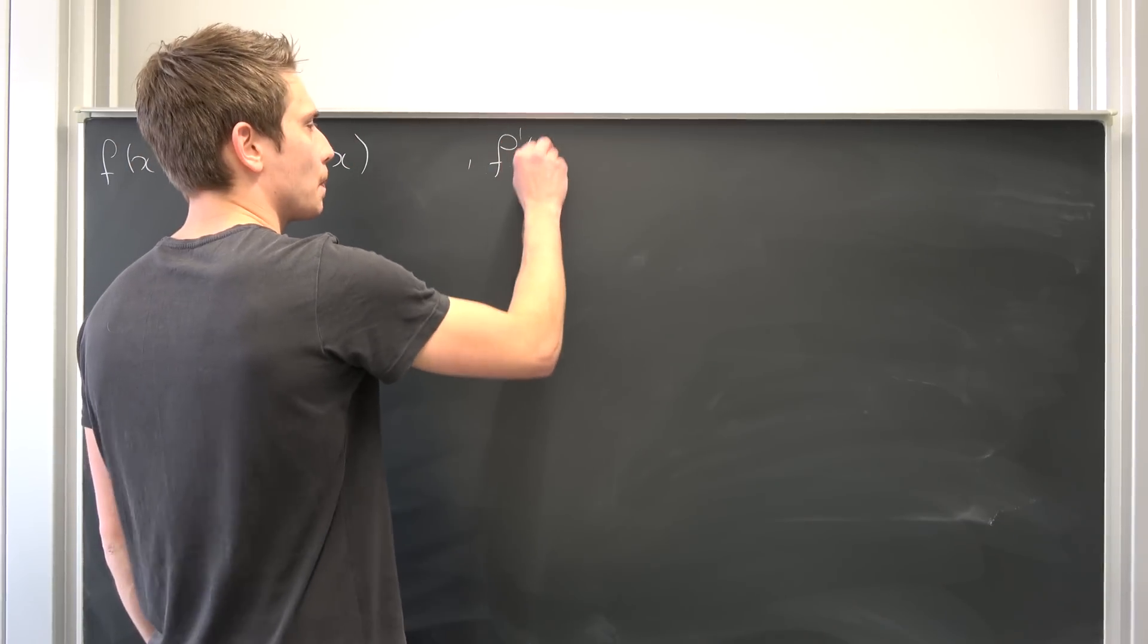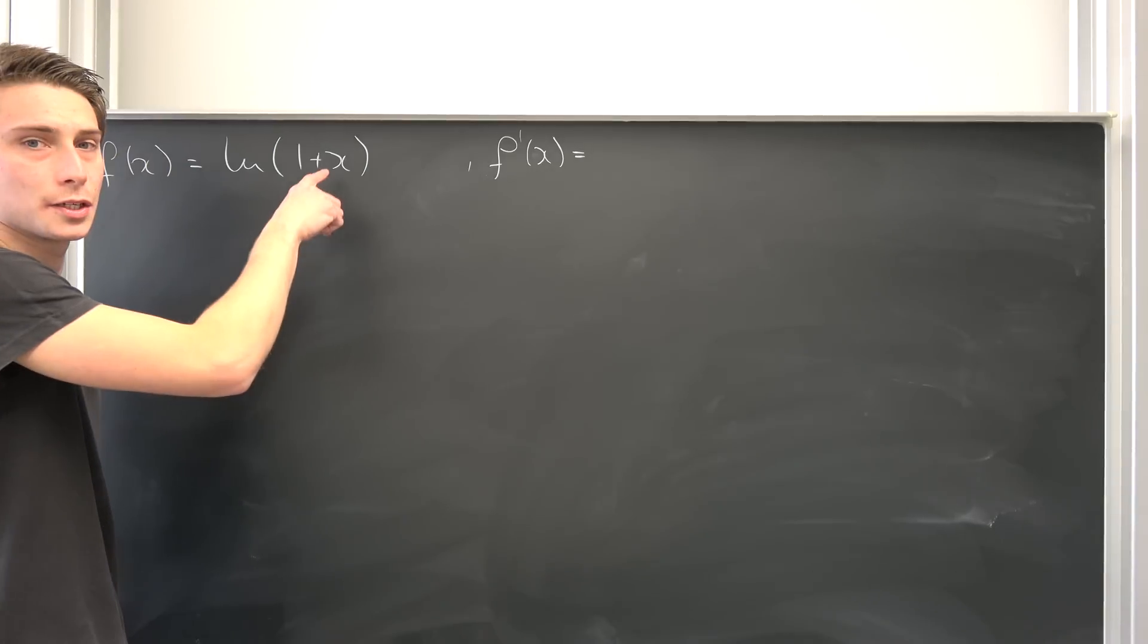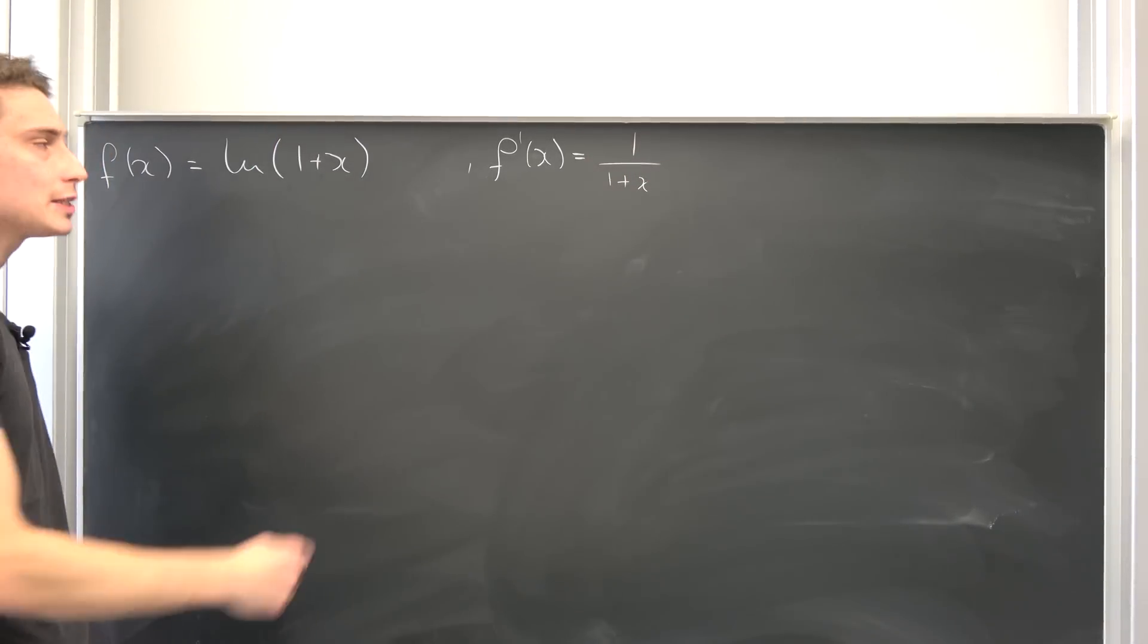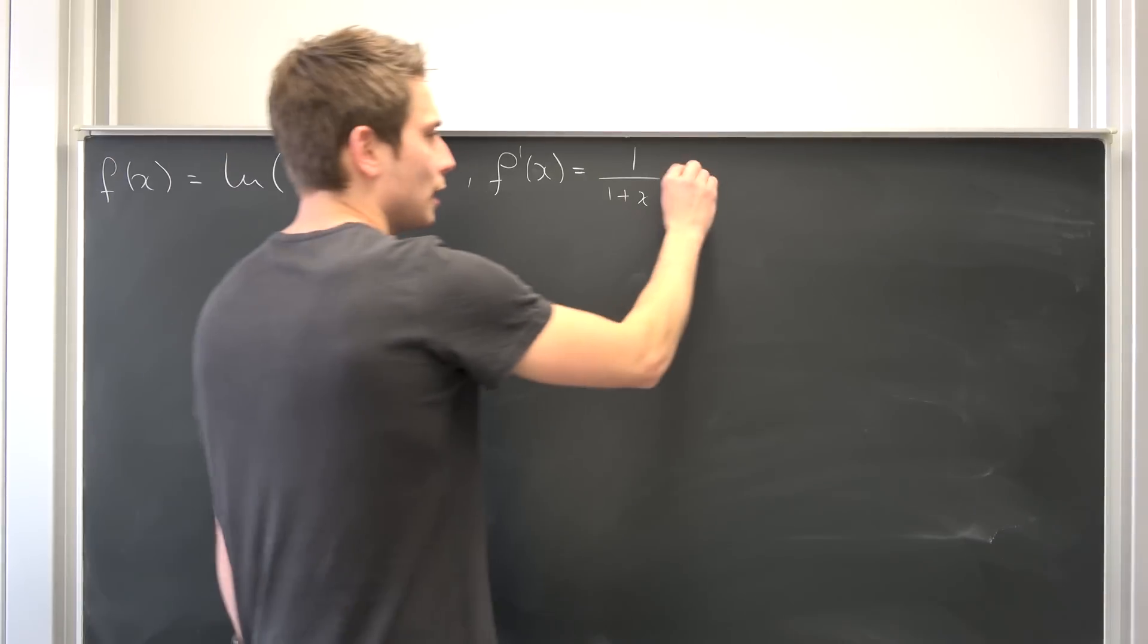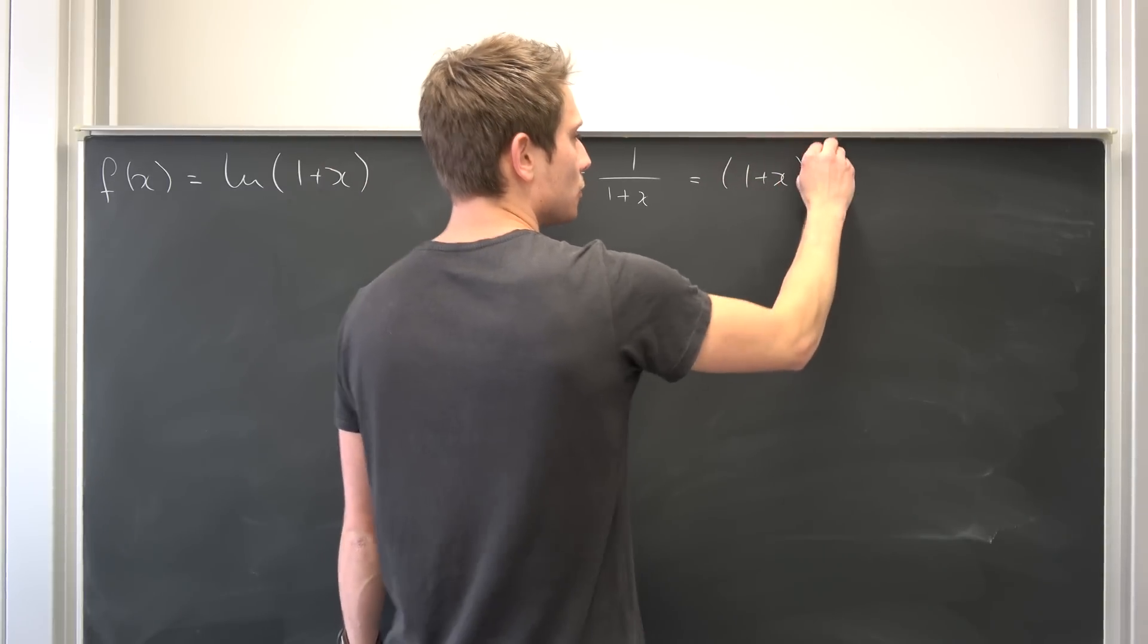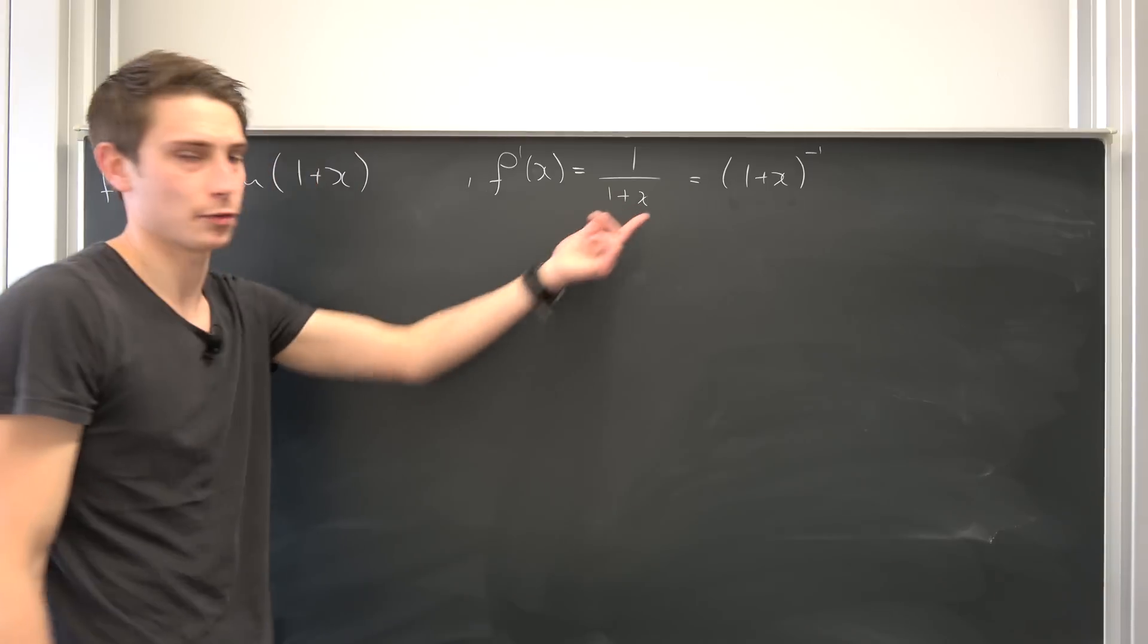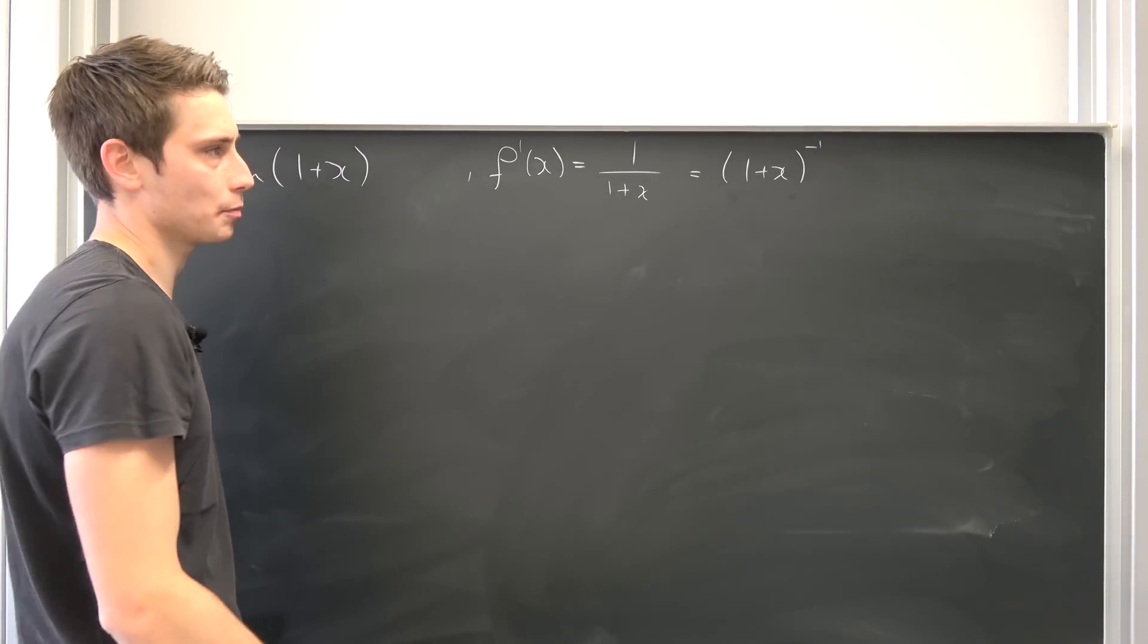So the first derivative of natural log of 1 plus x is going to be the outer derivative, so the derivative of the natural log is 1 over 1 plus x times the inner derivative. The inner derivative in this case is just going to be 1. I want you guys to rewrite this as 1 plus x to the negative 1 power. Differentiating this expression is easier if you write it with respect to certain powers.